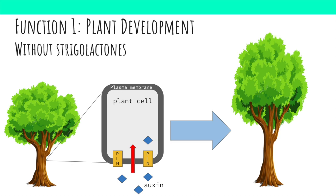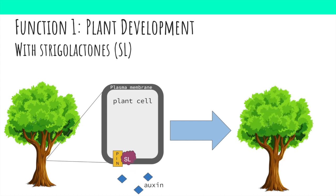This diagram shows the transport of auxin into a cell via PIN proteins, thus allowing for plant development. It is thought that auxin regulates the synthesis of secondary messenger hormones, including strigolactones. Strigolactones increase the rate of removal of the auxin transport protein PIN1 from the plasma membrane, therefore halting auxin transport. The removal of auxin transport channels inhibits the growth of plants.